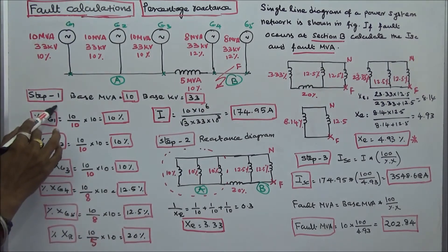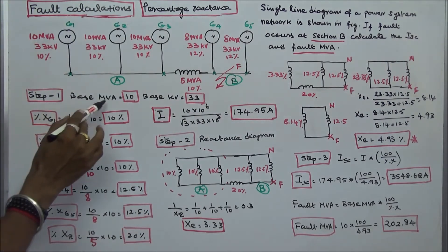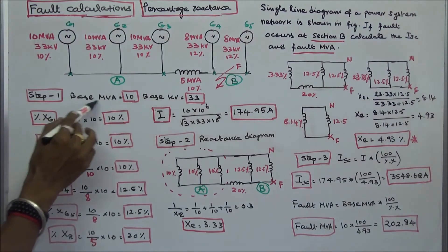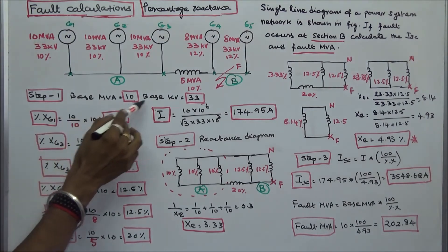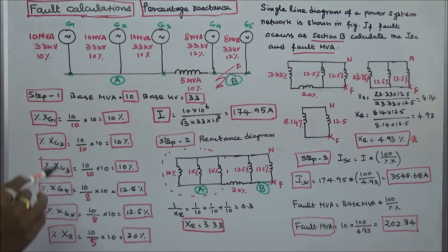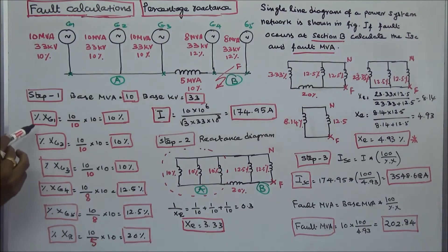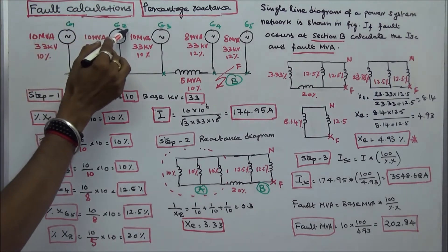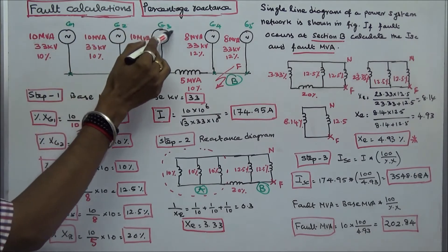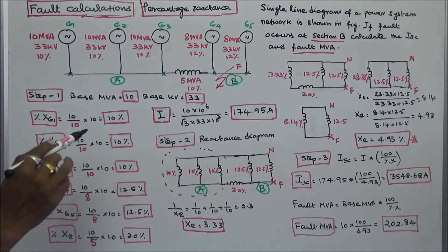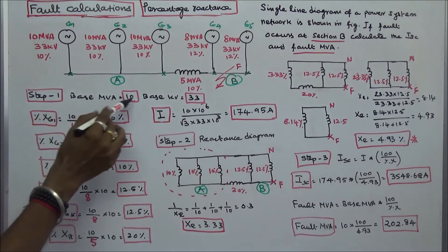Step 1: Choose base MVA and base kV. Base MVA is equal to 10, and base kV is equal to 33. Next, I have to calculate the percentage reactances of XG1, XG2, XG3, XG4, and XG5 based on this base MVA.